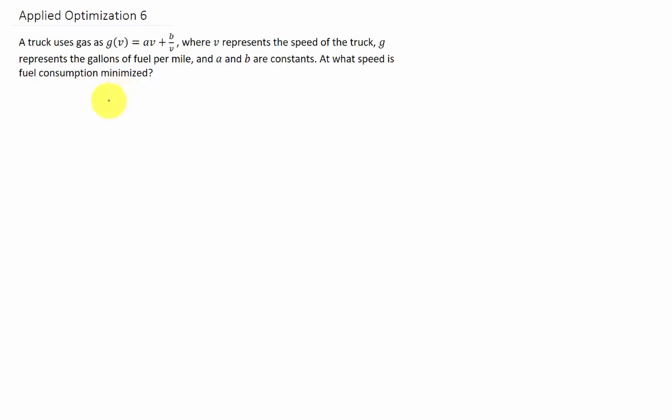A truck uses gas according to this function g(v) = av + b/v, where v represents the speed of the truck, g represents the gallons per mile, and a and b are constants. At what speed is fuel consumption minimized?